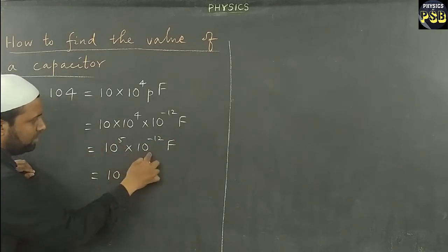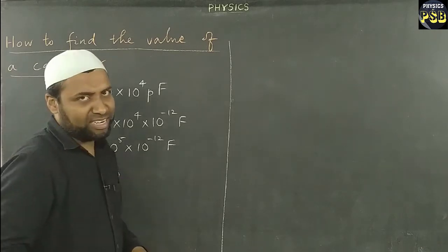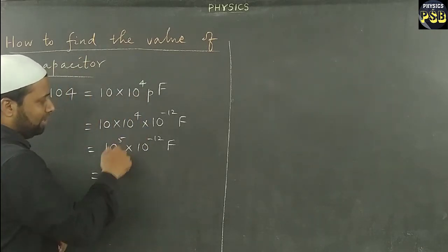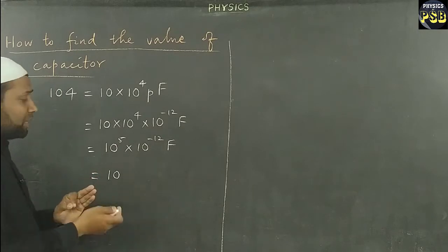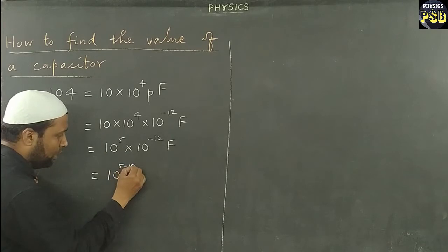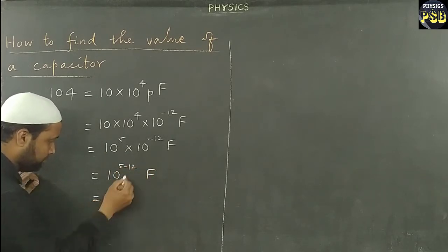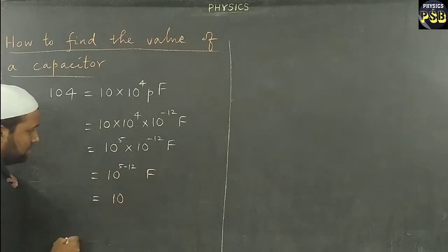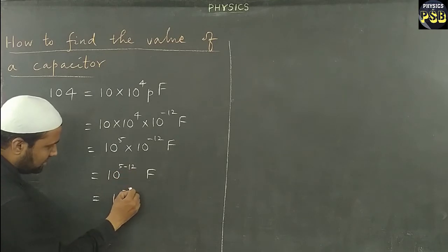Then next, here I multiply these two. When we multiply 2 terms which have powers, then in multiplication, the powers get added. So 10^(5-12) farad. So what we obtain is 10^-7 farad.